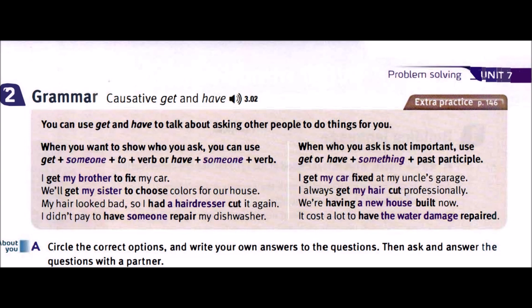When who you ask is not important, use get or have plus something plus past participle. I get my car fixed at my uncle's garage. I always get my hair cut professionally. We're having a new house built now. It cost a lot to have the water damage repaired.